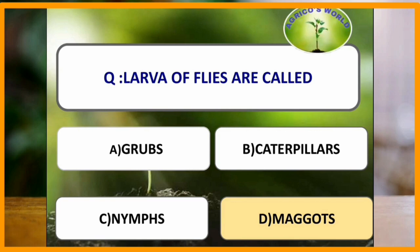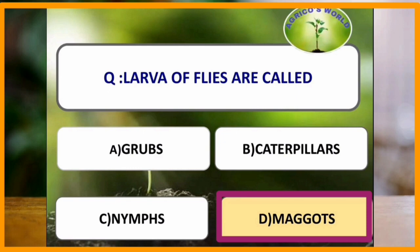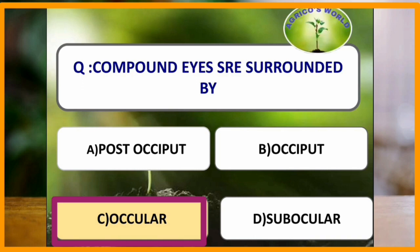Larva of flies are called maggots, whereas the larva of lepidopterans, i.e. moths and butterflies, are called caterpillars. The larva of beetles are called grubs and the larva of bugs are called nymphs. Compound eyes are surrounded by the ocular suture.